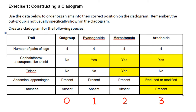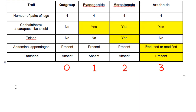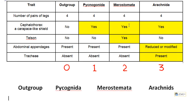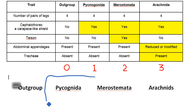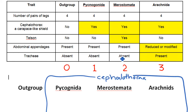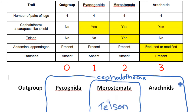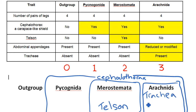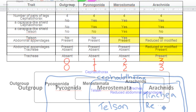It now becomes an easy job to create the Venn diagram. We can put in the species names here, then use this information to create it. These three species were separated off through the development of a cephalothorax. There is nothing else common in these species. These differ because they have developed a telson. The arachnids differ because they have developed trachea and reduced abdominal appendages.